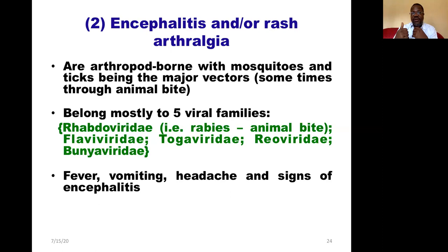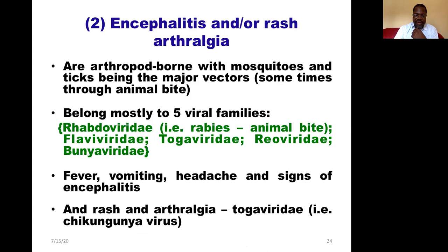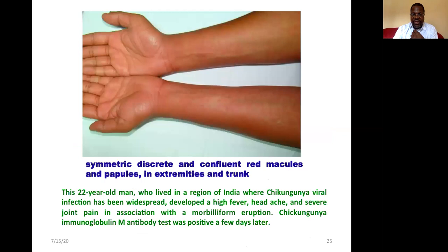The patient will develop fever, vomiting, headache, and signs of encephalitis. Some cause encephalitis only, while others — like Togaviridae — cause encephalitis with or without rash and arthralgia. Togaviridae can also just cause rash and arthralgia; an example is the chikungunya virus, which causes only rash and arthralgia.